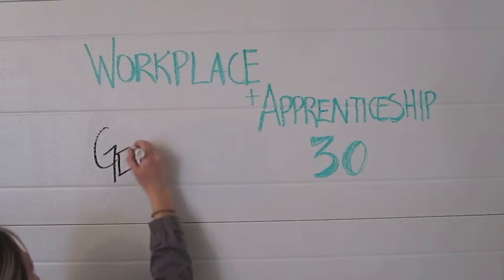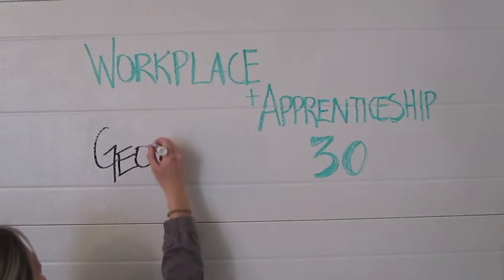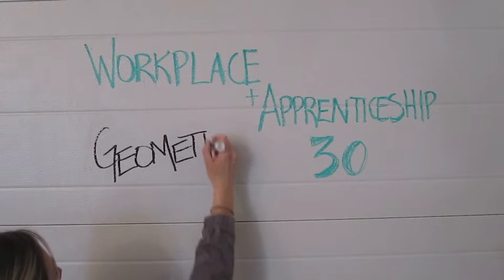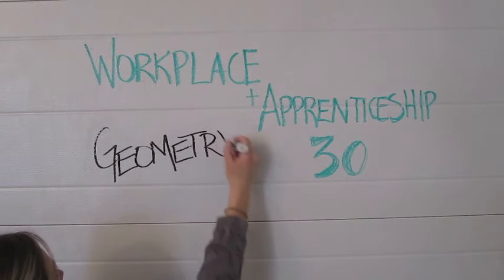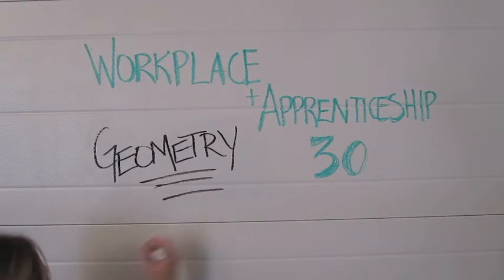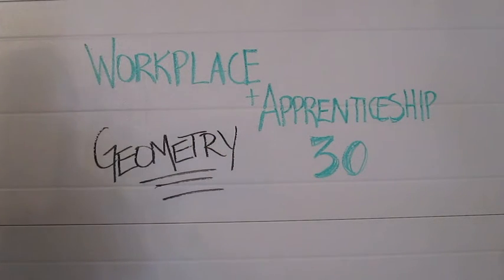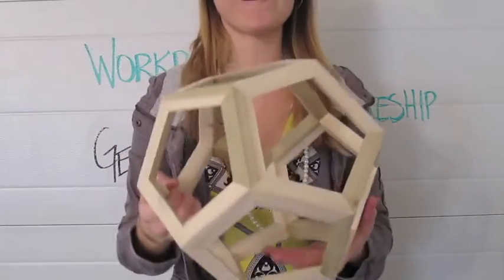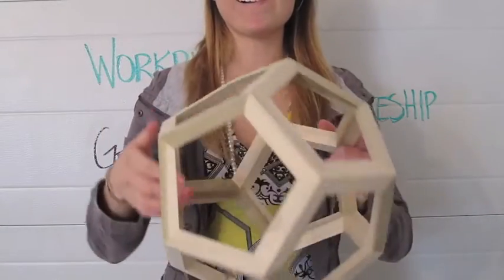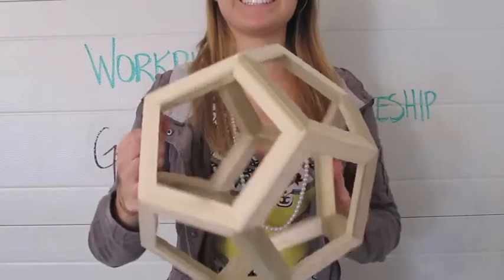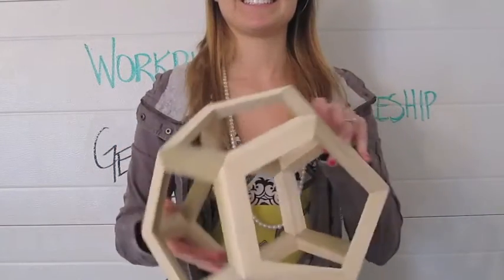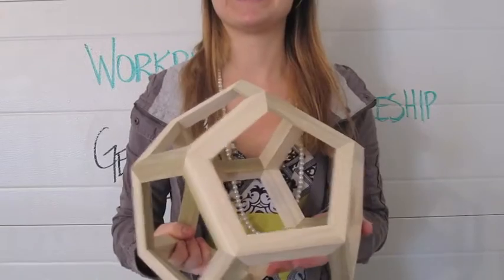Welcome to the Workplace and Apprenticeship 30 Geometry Unit. Today we'll be asking the question: how can we use numbers and symbols to represent space and shapes? We'll look at the dodecahedron, which has 12 sides, 30 edges, and 20 vertices.